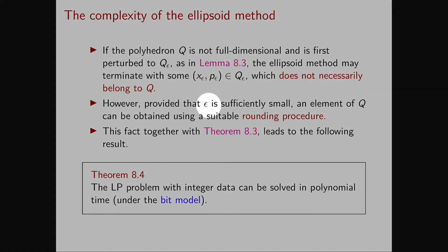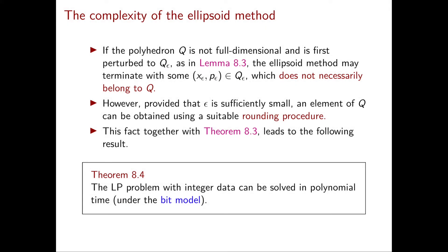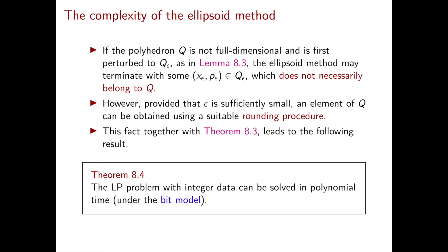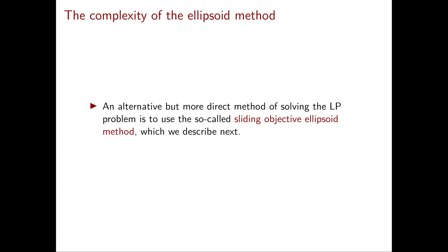This is a technical difficulty that fortunately can be solved. Since our epsilon is very small, it is possible to perturb the obtained vector in Q-epsilon in order to obtain a vector in Q, using a suitable rounding procedure. This fact, together with theorem 8.3, leads to the following fundamental theorem for linear programming optimization problems: the LP problem with integer data can be solved in polynomial time under the bit model using the ellipsoid method. Next, we discuss an alternative way to solve the LP optimization problem by recursively solving feasibility problems, called the sliding objective ellipsoid method, which doesn't require the construction of the dual.